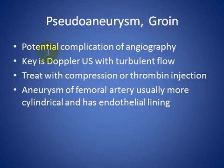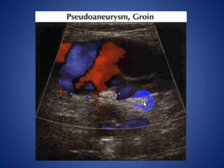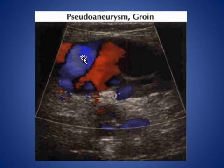Pseudoaneurysm is a potential complication of angiography. The key is Doppler ultrasound with turbulent flow; treat with compression or thrombin injection. A true aneurysm of the femoral artery is usually more cylindrical and has an endothelial lining. As we see here in sagittal color Doppler ultrasound, a yin-yang or to-and-fro flow of blood within the spherical common femoral artery pseudoaneurysm resulting from cardiac catheterization.